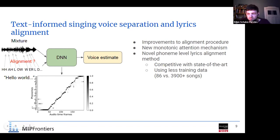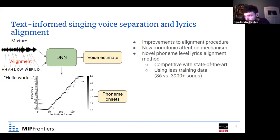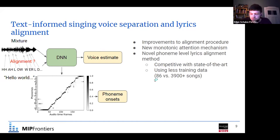We found a way to integrate this monotonicity into the automatic alignment procedure, contributing a new monotonic attention mechanism. Since from this alignment representation we can estimate the phoneme onsets, this is effectively a new automatic lyrics alignment method that can align phonemes on singing voice mixed with other instruments. We found this achieves quite good, competitive state-of-the-art results, while using much less data — state-of-the-art alignment methods use more than 3,900 songs for training, whereas with our small dataset we had only 86 songs.